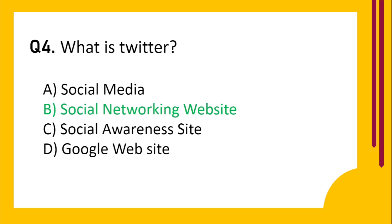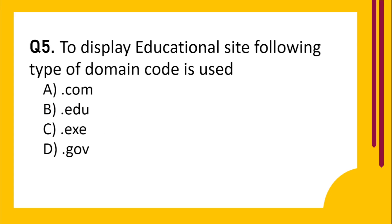Question number 5. To display an educational site, the following type of domain code is used. Option A: .com. Option B: .edu. Option C: .exe. Option D: .gov. The correct answer is Option B: .edu.